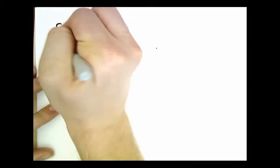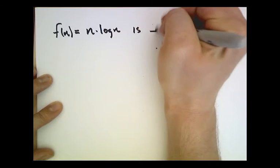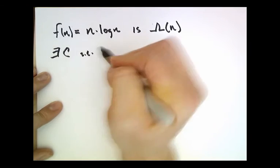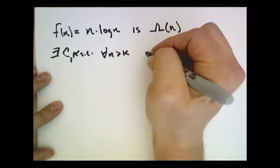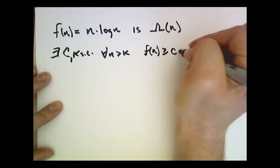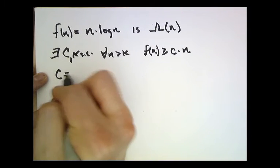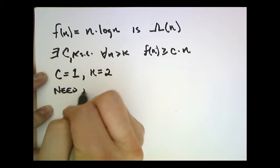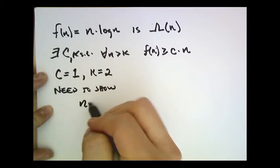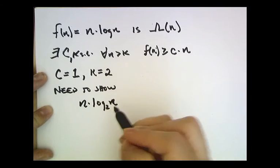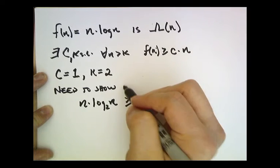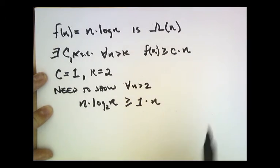Let's do another example. Let's prove that f of n equals n times log n is big Omega of n. We need to show that there exist constants c and k such that for all n greater than k, f of n is greater than or equal to that constant times n. I'm going to pick the constant c to be 1, and I'm going to pick k to be 2. We need to show that n times log n — this is log base 2 of n; when I don't write the base, it means log base 2 — is greater than or equal to 1 times n, for all n greater than 2.